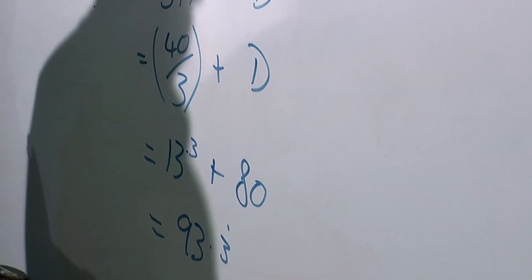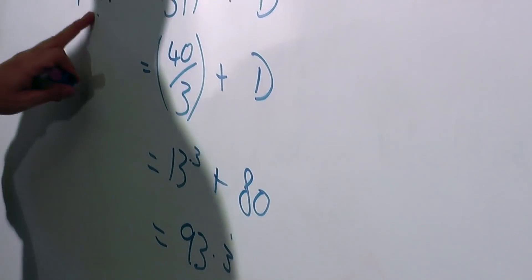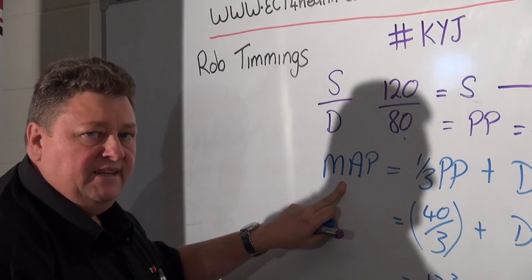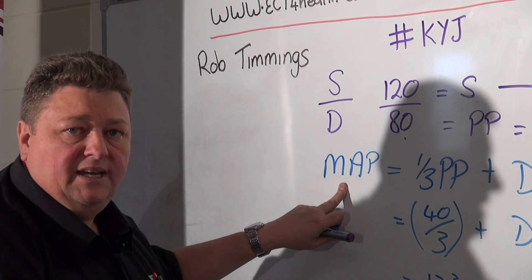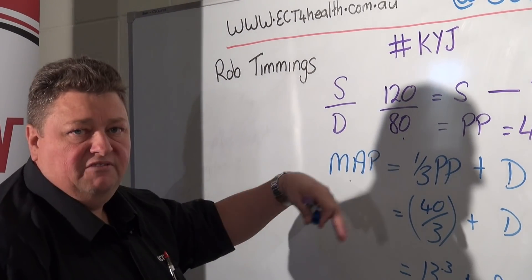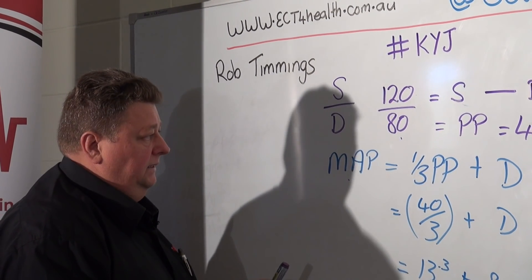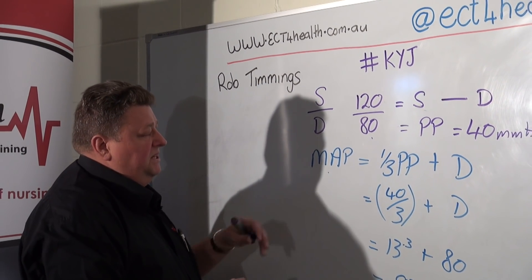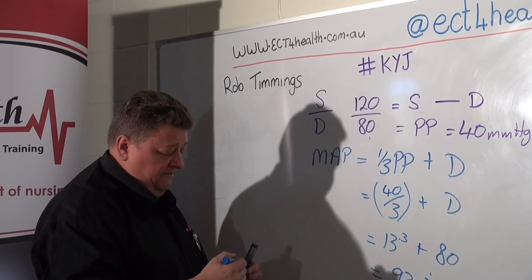At 93 millimeters of mercury somebody's mean arterial pressure is high enough, is adequate enough to be perfusing brain, heart, kidneys, lungs and we would expect that there would be enough perfusion and enough oxygenation of this patient if this mean arterial pressure was at that value.